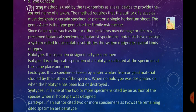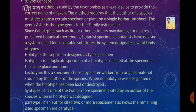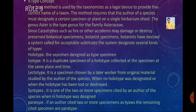There are six types used: holotype, isotype, lectotype, syntype, paratype, and neotype. The holotype is the specimen designated by the author as the type specimen. The isotype is a duplicate specimen of the holotype collected at the same place and same time. The lectotype is a specimen chosen by a later worker from the original material studied by the author when no holotype was designated, or when the holotype has been lost or destroyed.